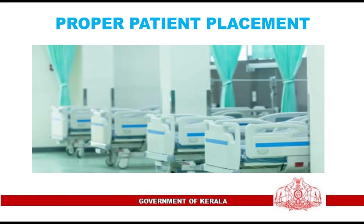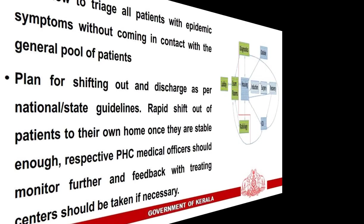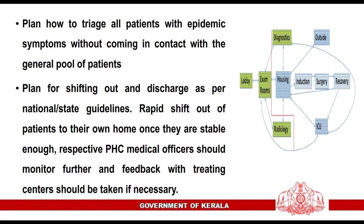Proper Patient Placement: Designate each area in the hospital — entry/exit, reception, triage, OPDs, wards, emergency areas, special care zones, etc. Plan patient flow for regular OPD, triage, and emergency scenarios. Display flow plans at patient entry zones, reception, and triage areas. Plan how to triage all patients with epidemic symptoms without contact with the general patient pool. Plan for shifting out and discharge per national or state guidelines, with rapid shift-out once patients are stable, monitored by primary health center medical officers.